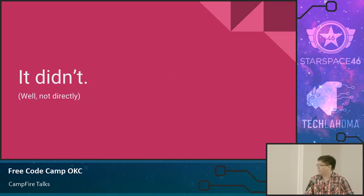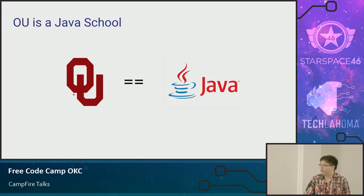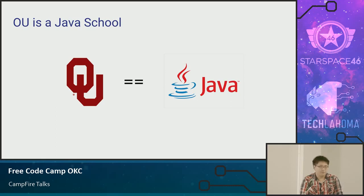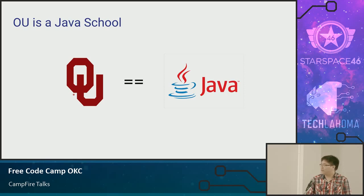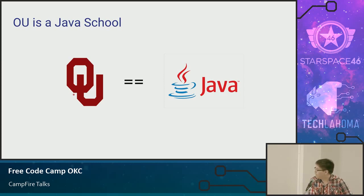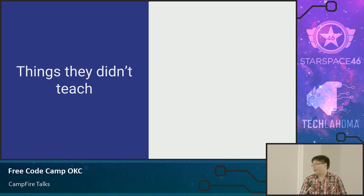Well, it didn't really help directly. At OU, you'll find out really quickly that it's mostly a Java school. Most of their classes — for the better part of your degree — you'll be working with Java. And while Java is a great language with a robust API and good type safety, students kind of get locked into thinking not 'how can I write this in code?' but 'how can I write this in Java?' You get locked into that mentality of how to write software.